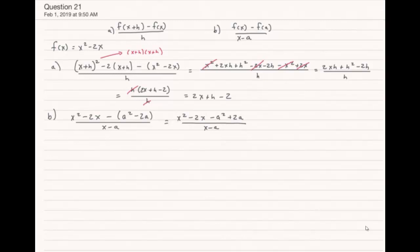Alright, I don't see much hope right now, so I'm going to play around with this until I can come up with something where I'll be able to divide out that x - a. The first thing I'm going to try is to group the x² and the a² together, and then group together the -2x and the +2a together.